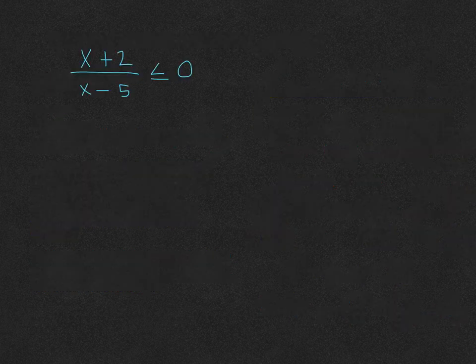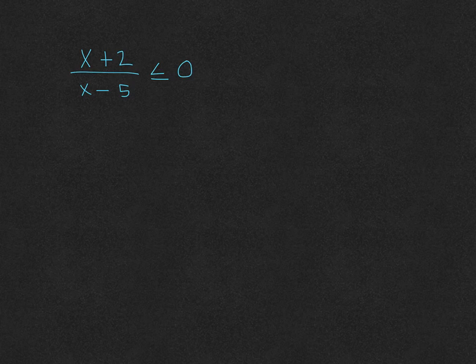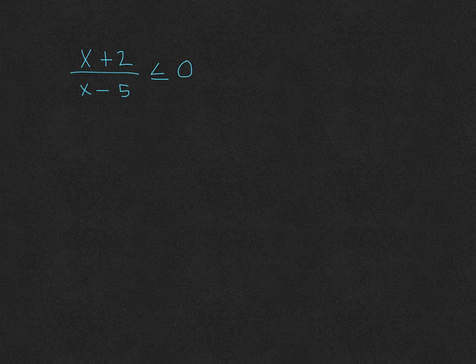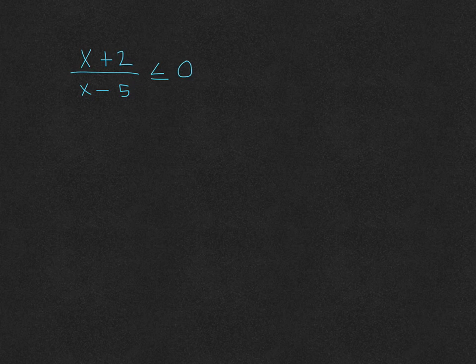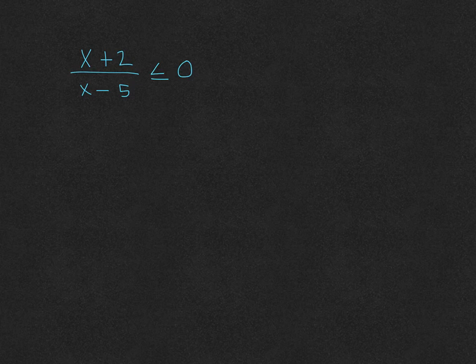Let's take a look at a couple more examples. So this one will be a rational equation. So first thing you want to do is make sure 0 is on the right side, and it is. And then we will factor. So it's already factored. So then we can move on to the step where we put the 0s on the number line.